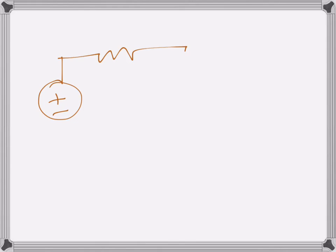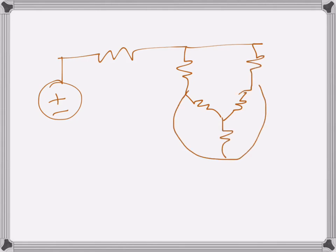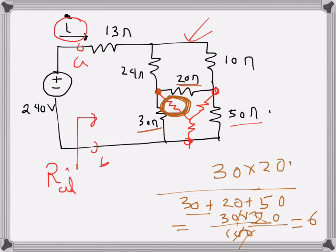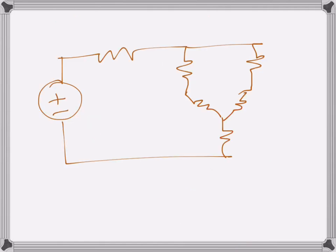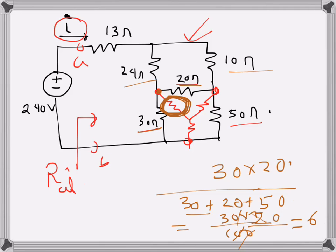I'll redraw the circuit now. This is my converted Y. The values are 13 ohms here, 24 ohms here, 10 ohms here, and the one I just found is 6 ohms, which goes there. Now if I want to find another resistance —